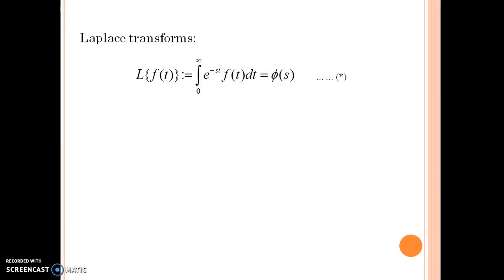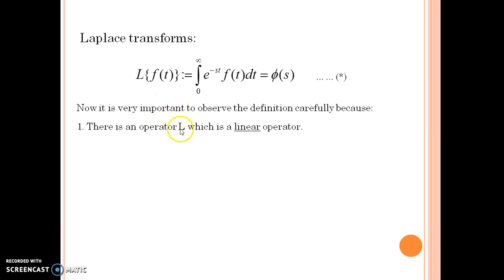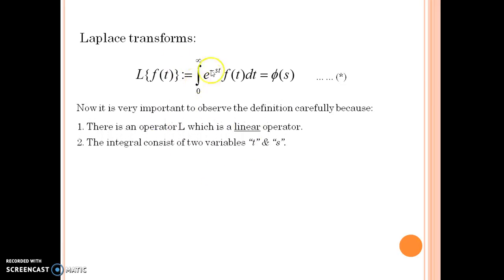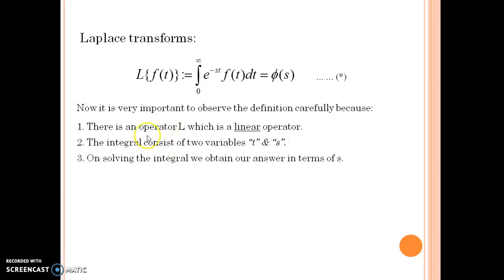Now regarding this definition I am making certain observations. First observation: we see that there is this operator L. This operator L is a linear operator — I will prove this in my next slide. Second observation: there are two variables, one variable is t and the other variable is s. The next observation is that whenever we solve this integral we obtain our answer in terms of s.